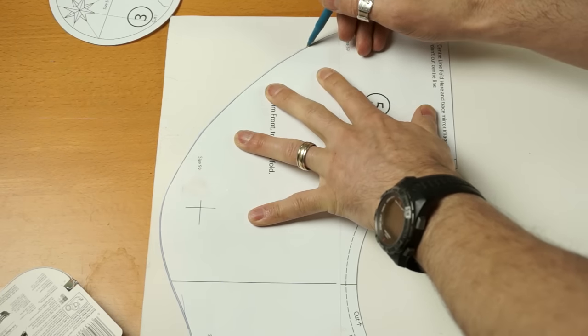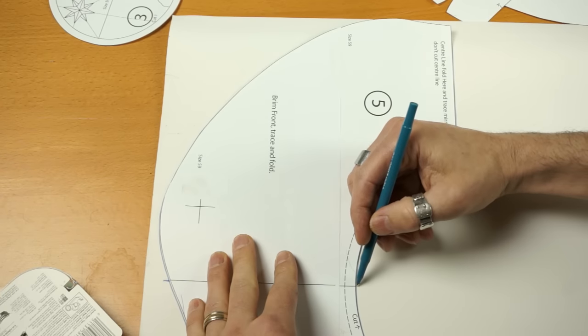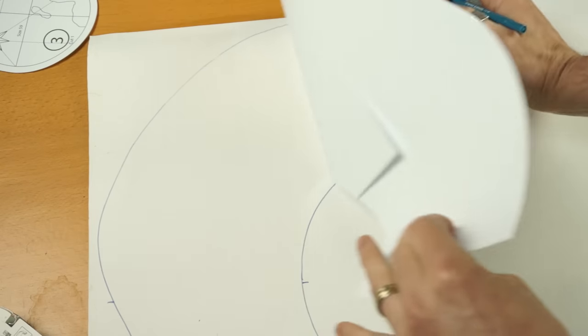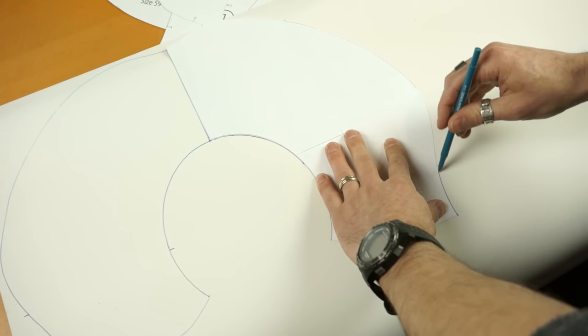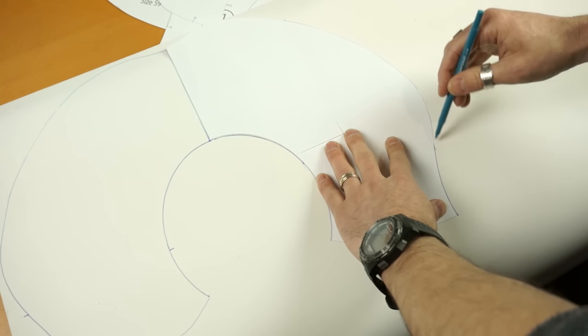Start with piece number five. Trace it once, right side up, and then flip it over, lining up the center marks, and then trace it again. When you go to cut, don't cut along that center line because this is now one full piece.